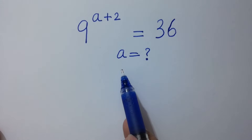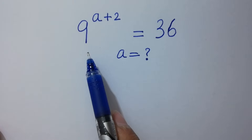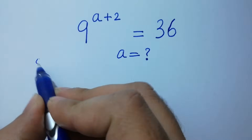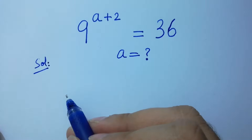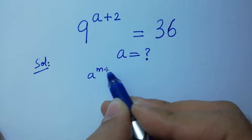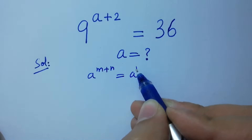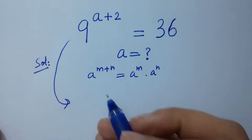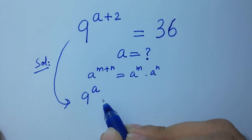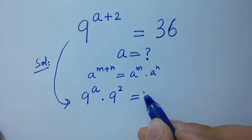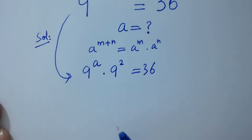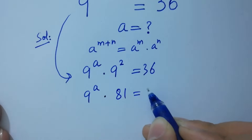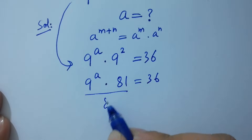Find the value of a if 9 to the power (a + 2) equals 36. As we know, a to the power (m + n) equals a to the power m times a to the power n. So it will be 9 to the power a times 9 to the power 2 equals 36.